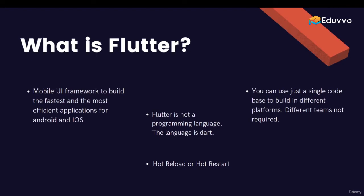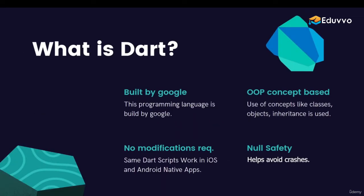Dart is the programming language built by Google which we will be using to code in Flutter. Dart is actually a very easy programming language and you can understand it even without any prior experience with a coding language or programming in general. Dart is an object-oriented programming language, which means it uses the concepts of classes, objects, inheritance, and more. It's actually really easy — easier than watering your plants.